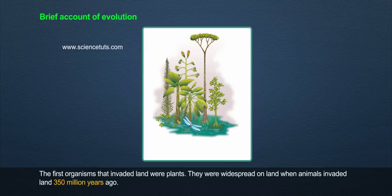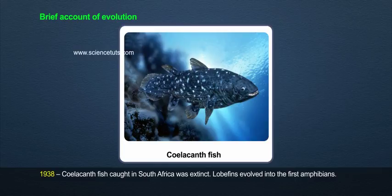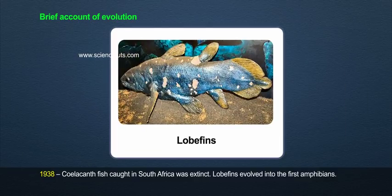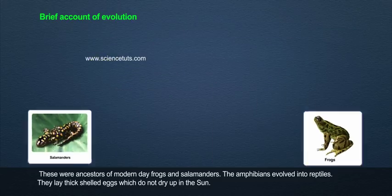Plants were widespread on land when animals invaded land 350 million years ago. Fish with snouts and strong fins could move on land and go back to water. In 1938, a coelacanth fish caught in South Africa was thought to be extinct. Lobe fins evolved into the first amphibians, which were ancestors of modern-day frogs and salamanders.